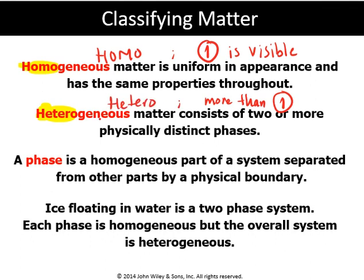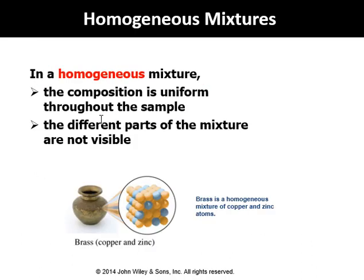Let's look at this example used in general chemistry classes. Brass is composed of copper and zinc — two different elements, two different pure substances. When you look at brass, you cannot find copper and zinc separately because it has a uniform appearance. You see only one thing, so we call that a homogeneous mixture — you cannot identify copper and zinc individually.